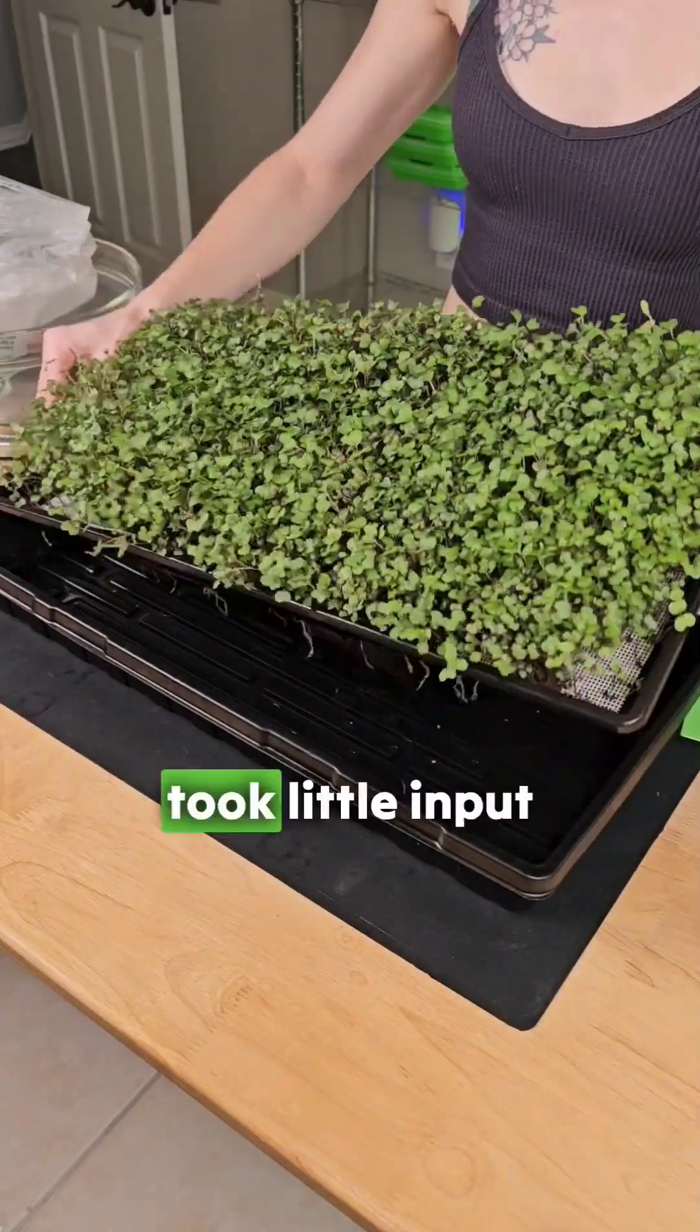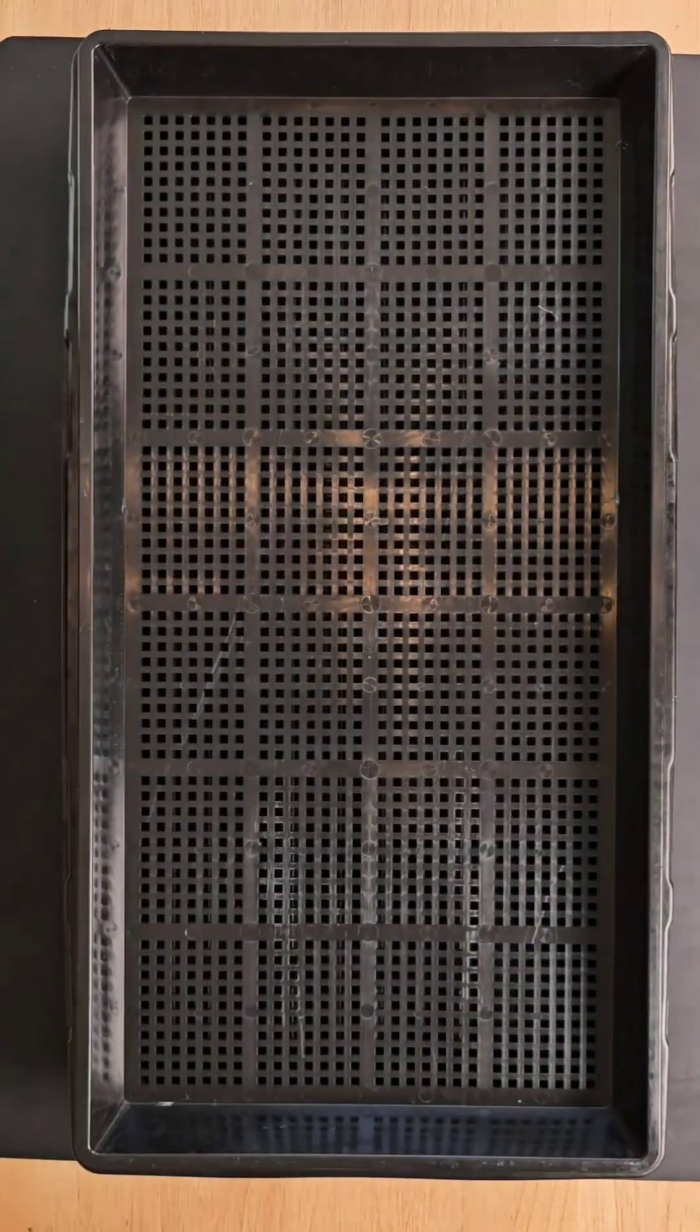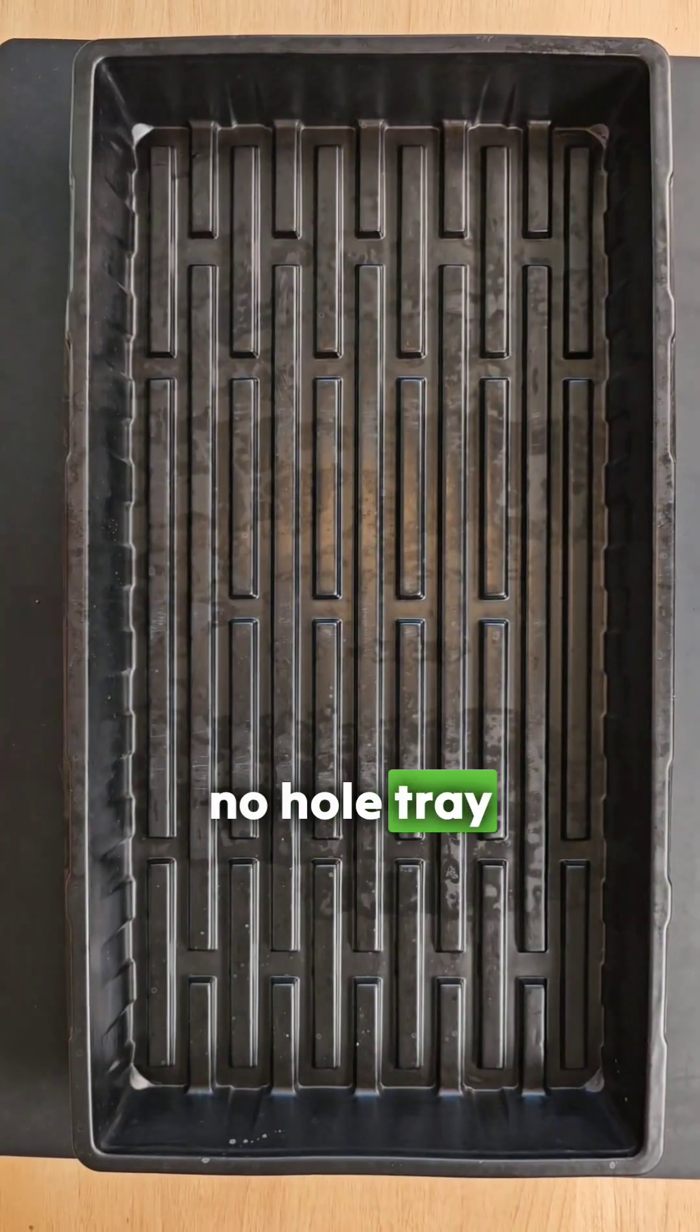In 12 days, we had a tray of microgreens that took little input. We used the crack key method where you take a shallow mesh tray with a 2 inch deep no-hole tray beneath.